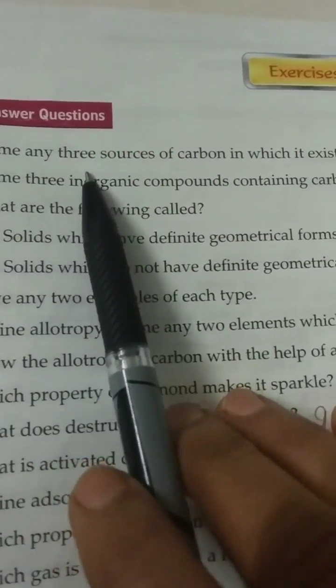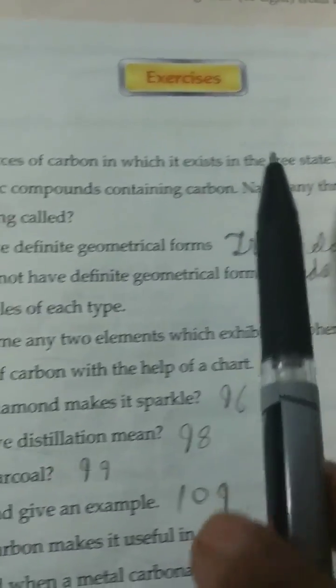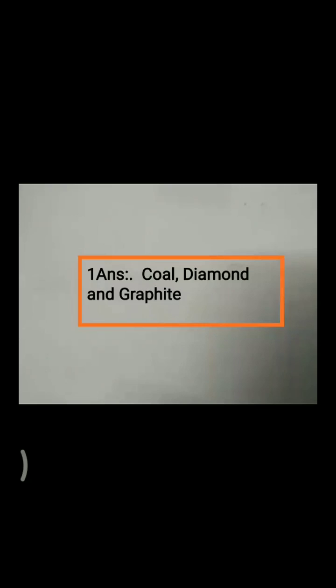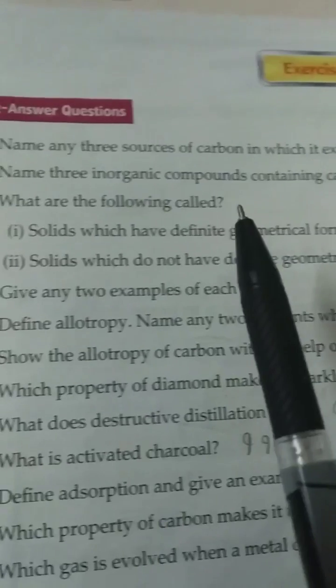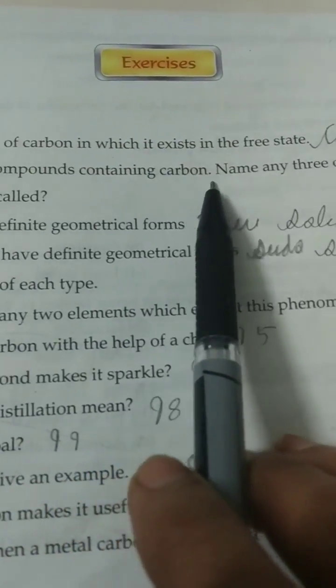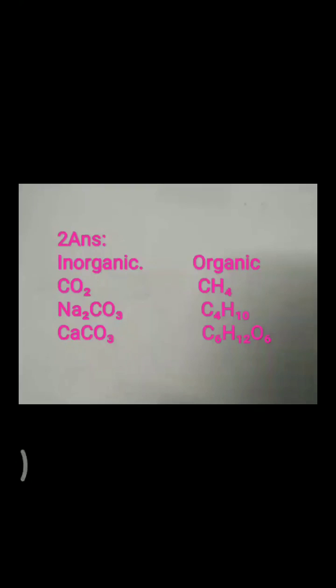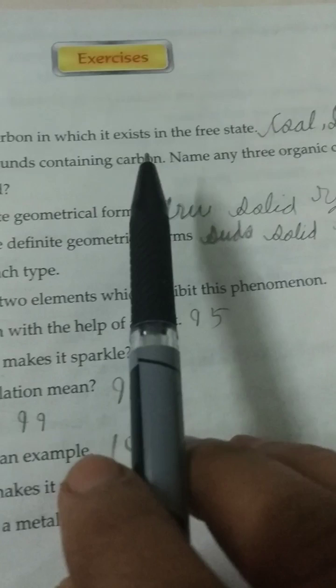Short answer questions. Name any 3 sources of carbon in which it exists in free state. First answer: coal, diamond and graphite. Second, name 3 inorganic compounds containing carbon and 3 organic compounds. Second answer: inorganic examples are carbon dioxide, sodium carbonate, calcium carbonate. Organic: methane, butane and glucose.